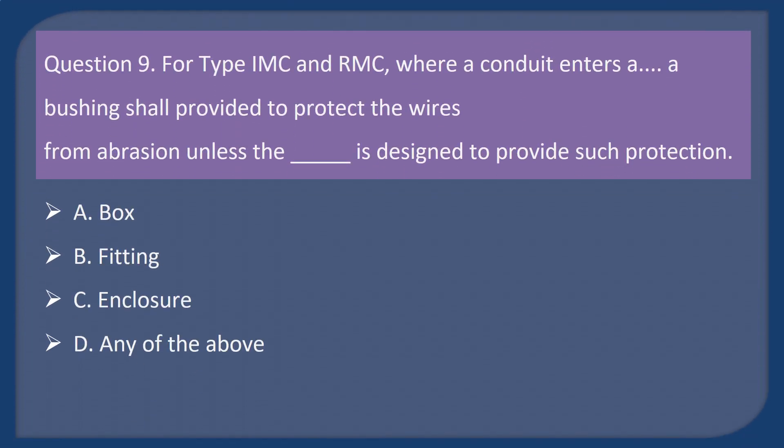Question 9. For type IMC and RMC, where a conduit enters a ____, a bushing shall be provided to protect the wires from abrasion unless the ____ is designed to provide such protection. A. Box. B. Fitting. C. Enclosure. D. Any of the above.